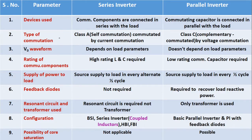Second one is type of commutation. In the series inverter we use Class A commutation, which is called as self commutation. That means in the series inverter the SCRs are self commutated and the commutation used is current commutation. Whereas in the parallel inverter Class C commutation is used, which is also called as complementary commutation, and here the SCRs are commutated by voltage commutation — the voltage across the charged capacitor is applied across the conducting SCR so that it can turn off.